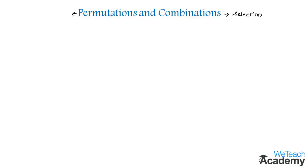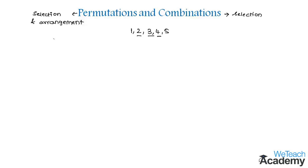In general, combination is nothing but selection, while permutation is selection and arrangement. This can be explained with a simple example. Let us consider the numbers 1, 2, 3, 4 and 5. Forming a three digit number from these elements is called a permutation, and this involves two steps. First we select the numbers — say 3, 2 and 4 — and then we arrange them to get numbers like 234, 324, 423, and so on.